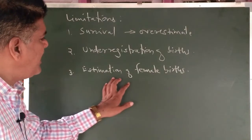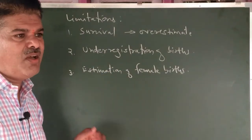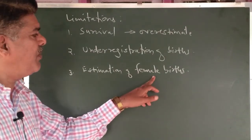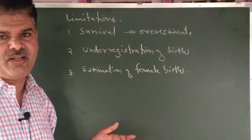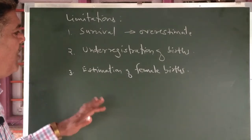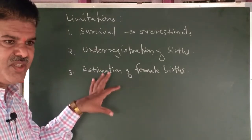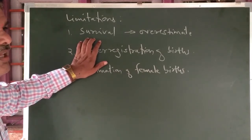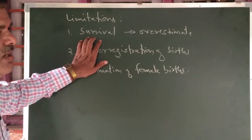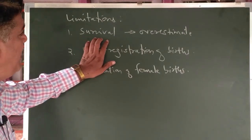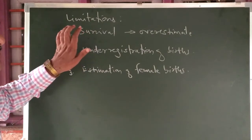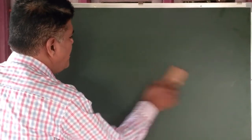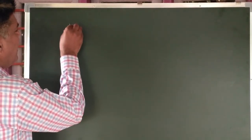Another limitation is the estimation of female births. The way we can estimate or forecast female births may be inaccurate, so there is an estimation problem of female births. To overcome this, and particularly the major limitation of GRR which is the survival rate of a female child, we use one more reproduction rate.